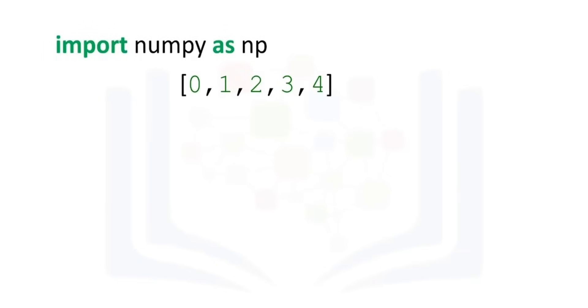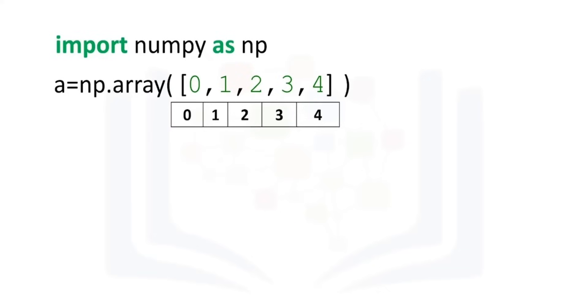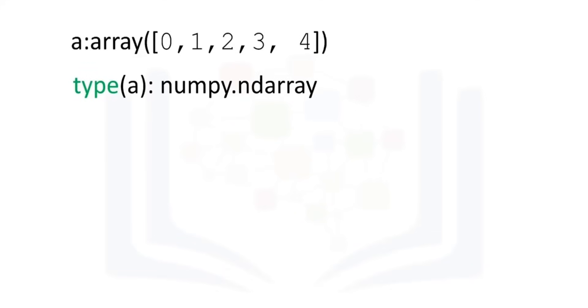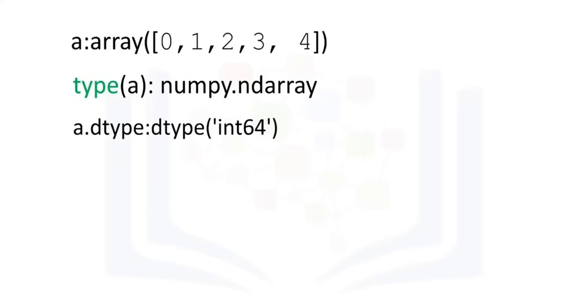We can cast a list to a NumPy array by first importing NumPy. We then cast the list as follows. We can access the data via an index. As with lists, we can access each element with an integer and a square bracket. If we check the type of the array, we get numpy.ndarray. As NumPy arrays contain data of the same type, we can use the attribute dtype to obtain the data type of the array's elements — in this case, a 64-bit integer.